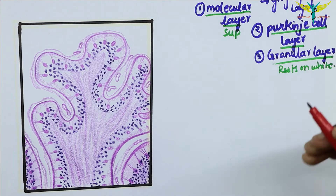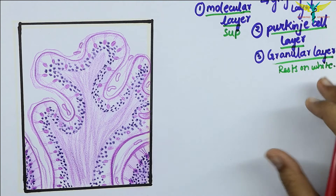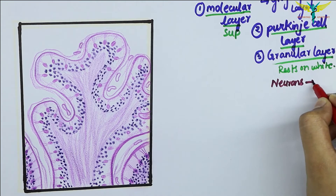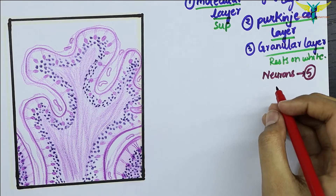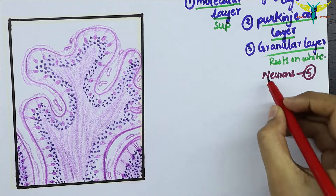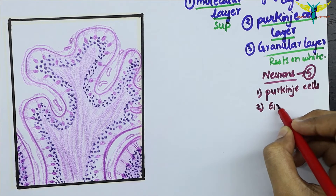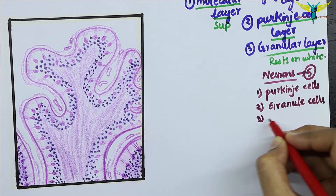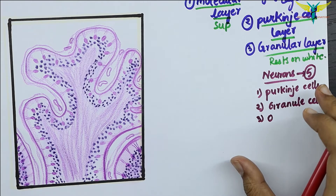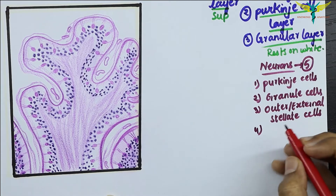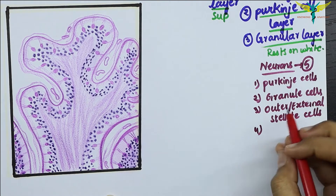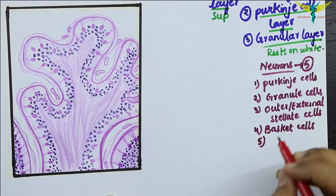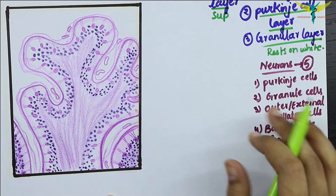Now let's talk about the types of neurons present in the cerebellar cortex. These are of five types: the first is the Purkinje cells, the second type are the granule cells, the third type is the outer or external stellate cells, the fourth type is the basket cells, and the final type is the Golgi cells.